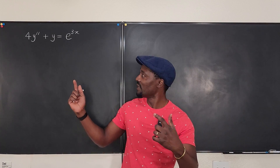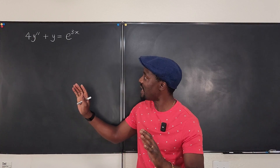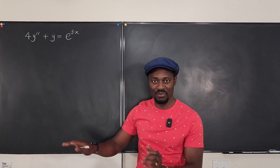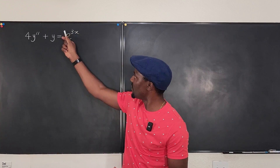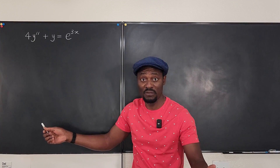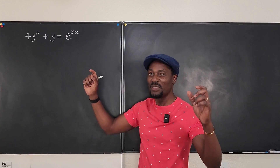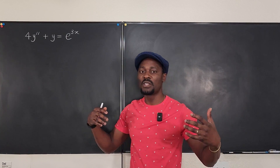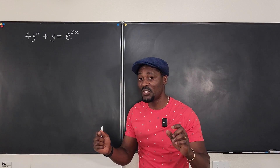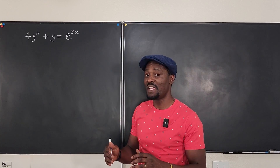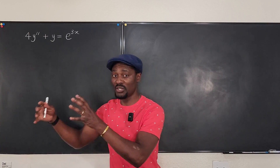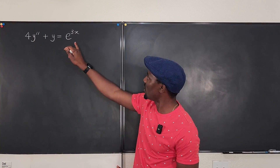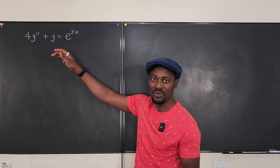We want to talk about differential equations. This is a non-homogeneous differential equation because there's something on the right-hand side. Previous videos showed cases where there's nothing on that side except zero, which was easy to solve. But now our general solution is going to look a bit different because it will contain the solution from the homogeneous part, plus an additional piece.